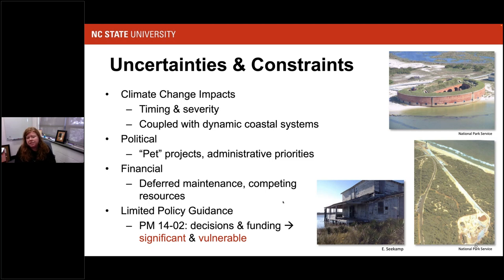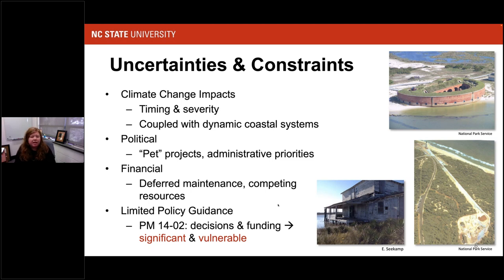Cultural resources compete directly with natural resource programs — things like threatened and endangered species and the money needed to ensure biodiversity. Management directives can come in the form of policy memos, like the one put forward by then-Director John Jarvis in 2014 — policy memo 1402 — which directed cultural resource management in the National Park Service to ensure decisions and funding consider not just those that are significant, but also resources that are most vulnerable, and that's where attention should be given.